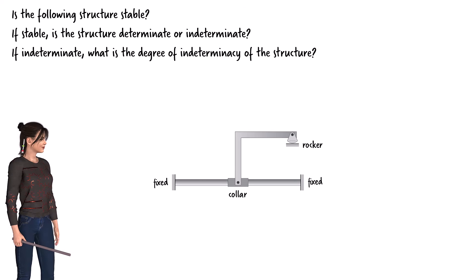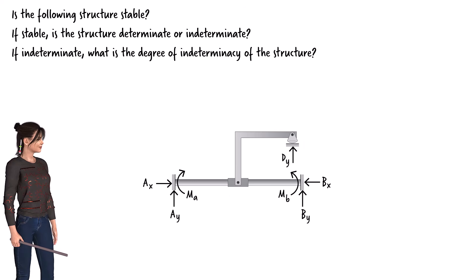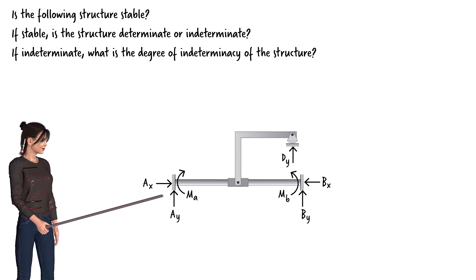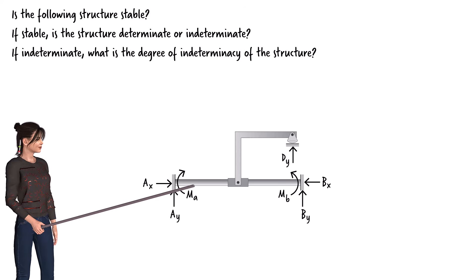To determine if the structure is stable, we need to consider whether the entire structure or any part of it fails to satisfy the equilibrium conditions. If we draw the free-body diagram for the structure as a whole, we get a total of seven unknown support reactions. There are three reaction forces at each fixed support, and a vertical reaction force at the rocker.